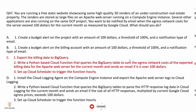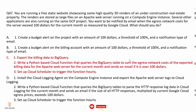Option A: create a budget alert on the project with an amount of $100, a threshold of 100%, and notification type email. This provides a notification for overall project spending but not specifically for the egress network cost of the Apache web server. Option B: create a budget alert on the billing account with $100 threshold — this also covers overall billing account spending, not specifically egress network costs for the web server.